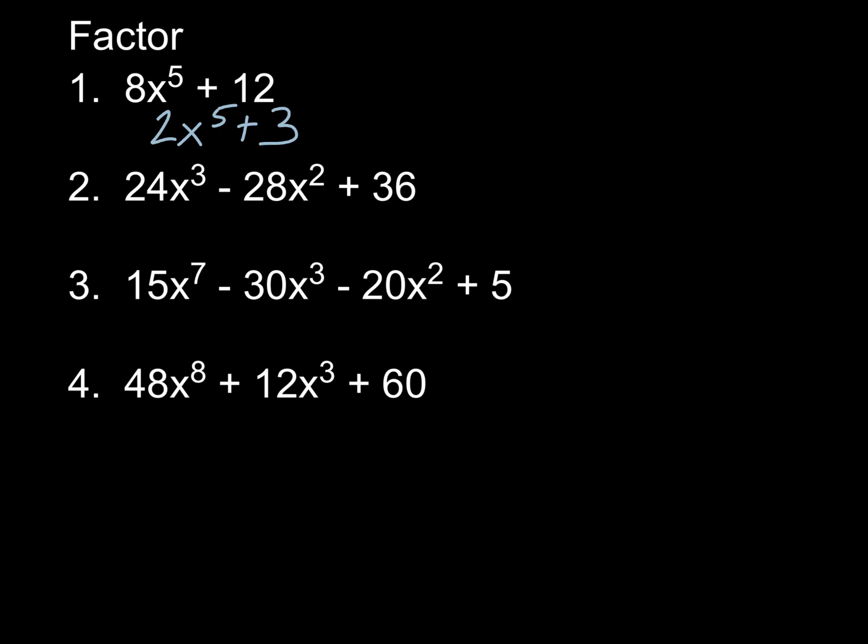But notice that what I just wrote here is not equivalent. This is distributive property backwards. So whatever I divided out, I've got to put parentheses around this and write that number out front. Because the whole idea is that if I multiplied that 4 back in using distributive property, I'd get what we started with. That's what we're looking to do with these.